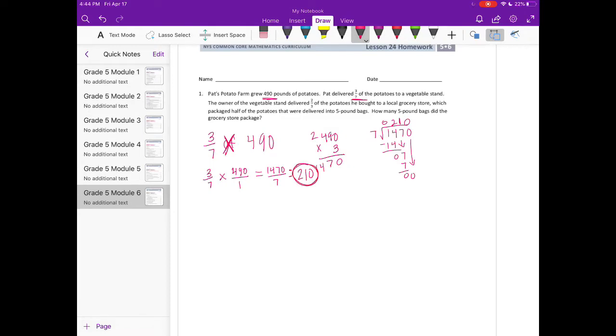So they delivered 210 potatoes to the vegetable stand. The next part says the owner of the vegetable stand delivered two-thirds of the potatoes he bought to a local grocery store.